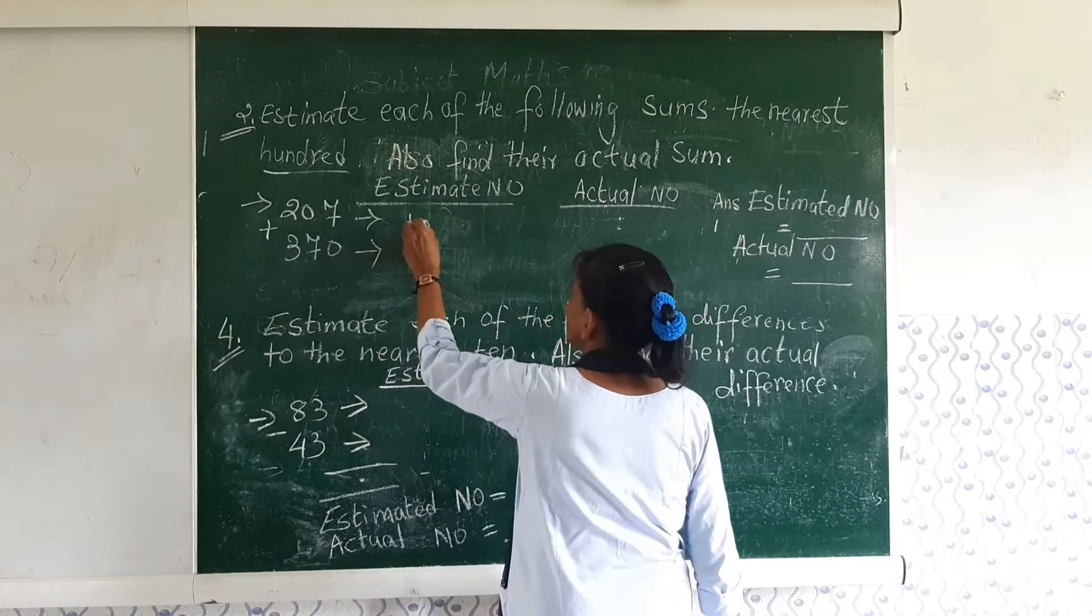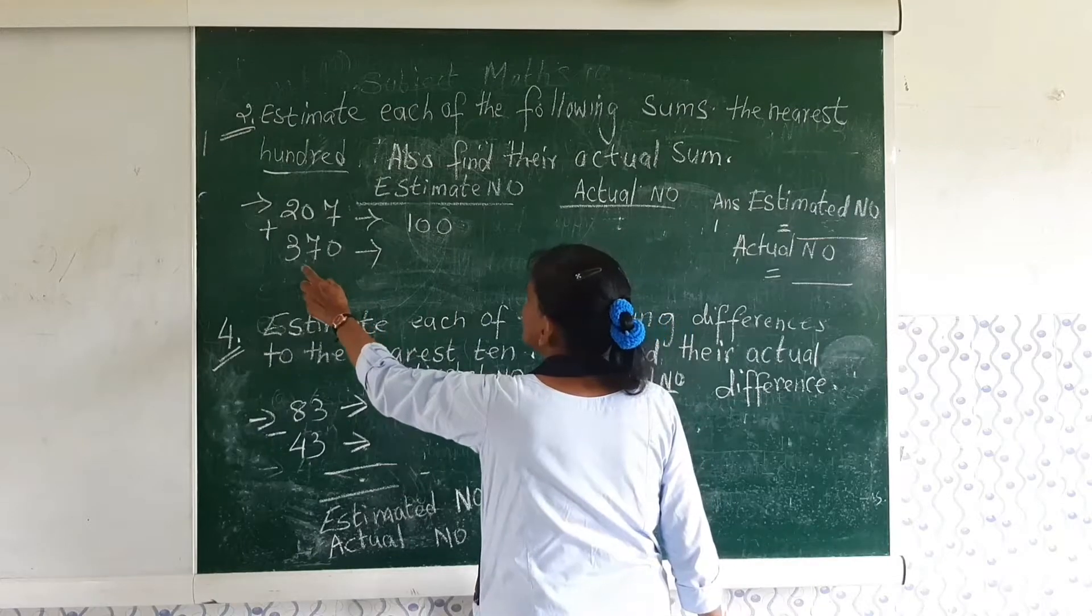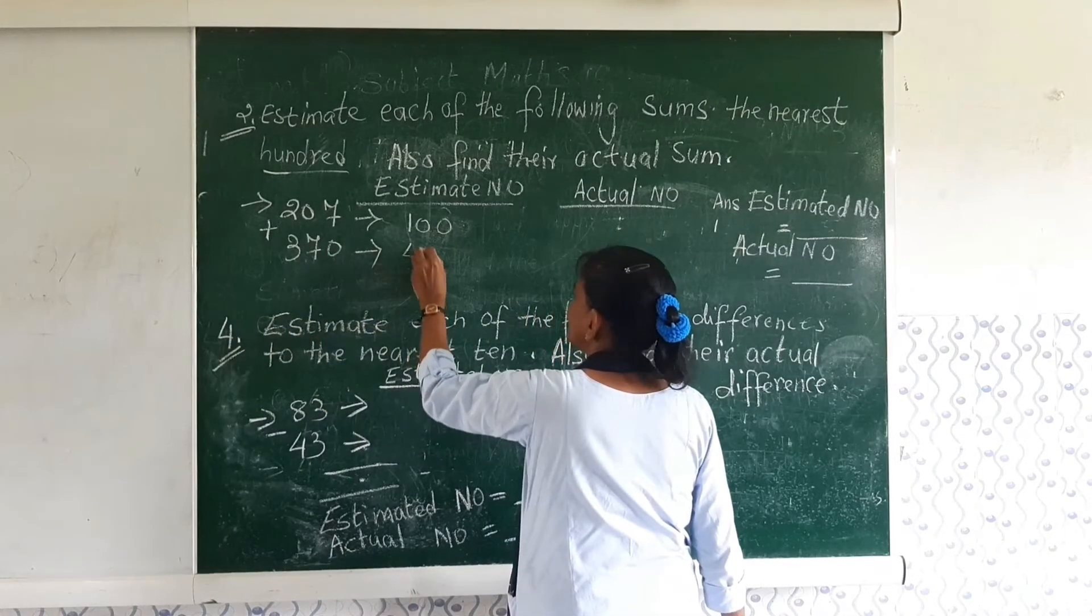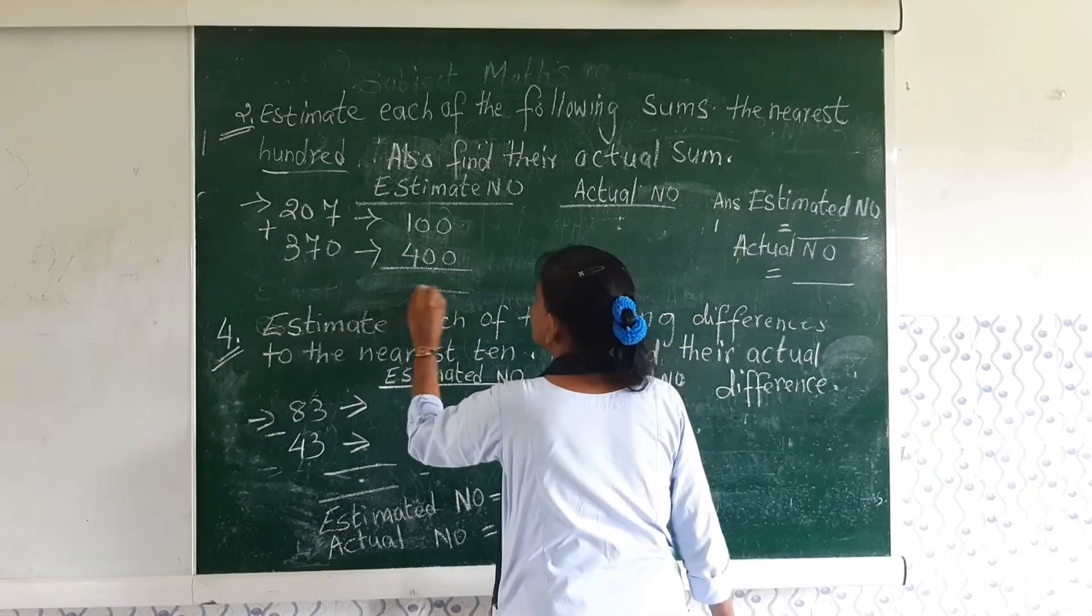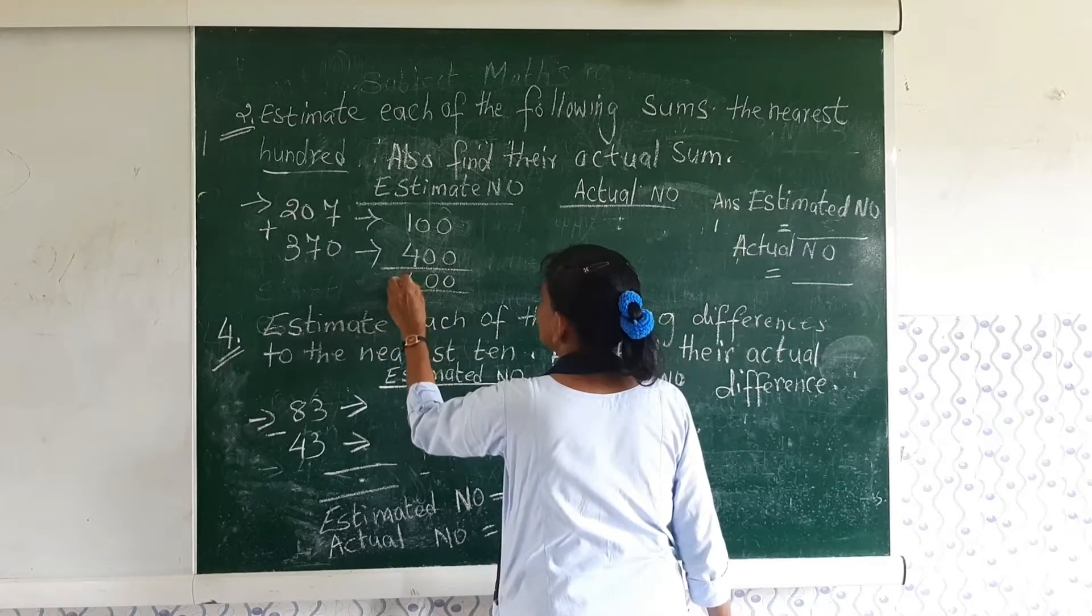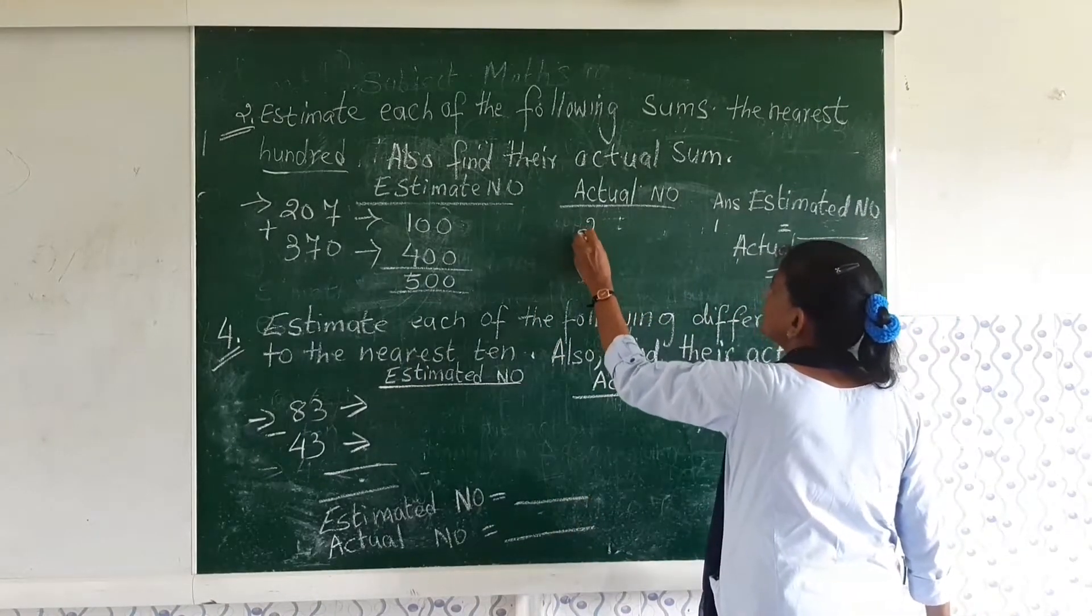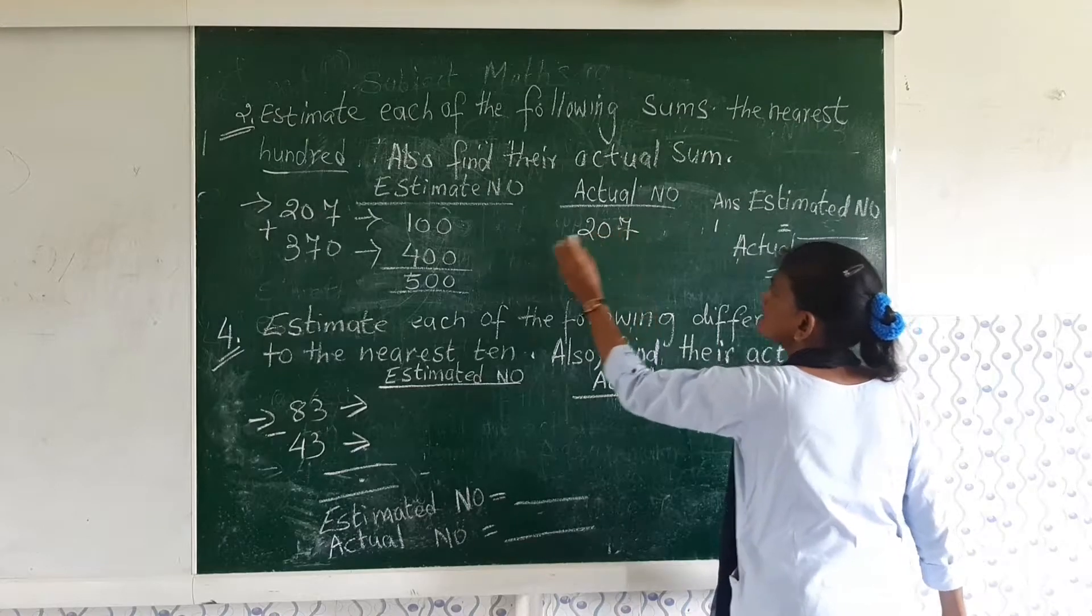It will turn to 200. And here 370 which is more than 5, it will turn to 400. So your result is 500. The actual number is 270 plus 307.